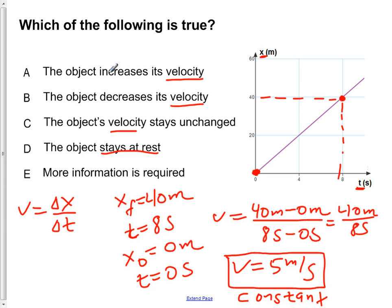So the question, now part A says, the object increases its velocity. Well, we just proved here that our velocity is 5 meters per second. And because the slope is unchanging, the velocity also does not change. So A is wrong.